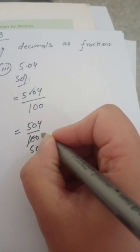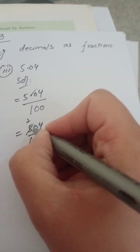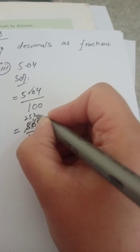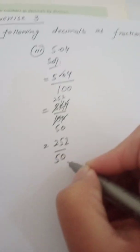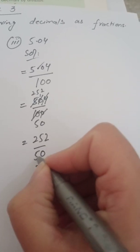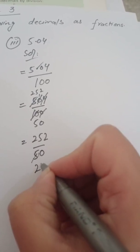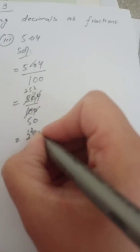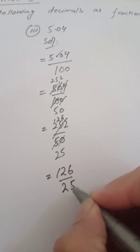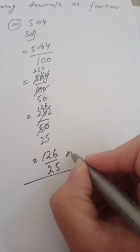Now we simplify 504 upon 100. We divide: 2 goes into 504 as 252, and 2 goes into 100 as 50. Then 2 goes into 252 as 126, and 2 goes into 50 as 25. So we have 126 upon 25. Since 126 is even and 25 is odd, this cannot be simplified further. The final answer is 126 upon 25.